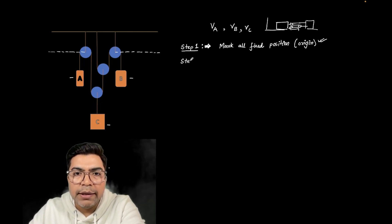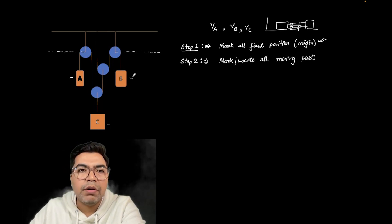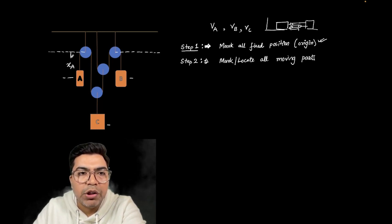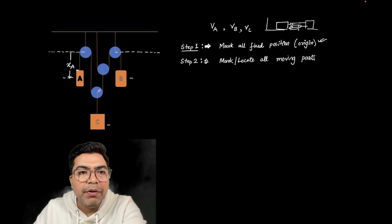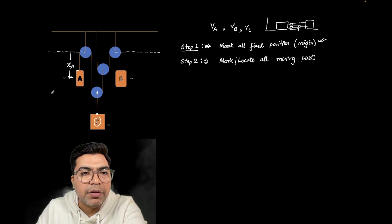Now step 2. Step 2 is: you have to mark all moving parts. So mark or locate all moving parts. So this is also simple. What are moving parts here? A is a moving part. So we'll mark this. Let's say I call this as XA, and because this is the origin, I'm marking their position like this. Then we'll mark C. Now C is attached to this pulley, which is moving, and whatever is the motion of C is the motion of the center of this pulley. And therefore, instead of C, I can mark this as XC.